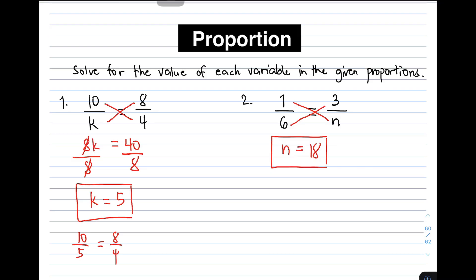Now, if you want to check whether our answer is correct, you can substitute the value of n to the given original proportion. We have 1 over 6 is equal to 3 over 18. Now, sir, is this a proportion?